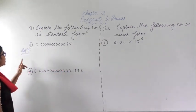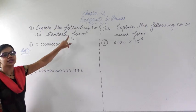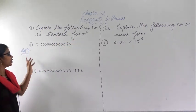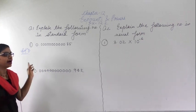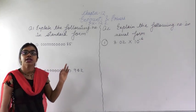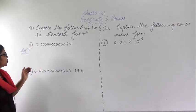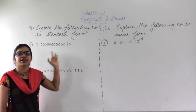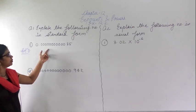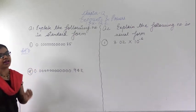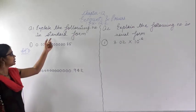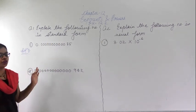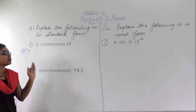The first question says: explain the following number in the standard form. Now what is standard form? In standard form, we are given a larger number and we have to convert it to the simplest form — that is known as the standard form. So this number is given in the usual form and we have to convert it into the standard form.